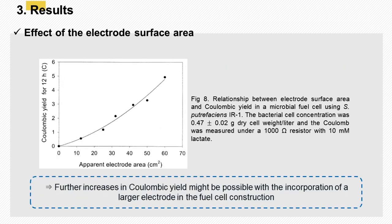Effect of electrode surface area: a series of fuel cells with different anode surface areas were operated for 12 hours using bacterial suspension to measure coulombic yield with the 1,000-ohm resistor. As shown in Figure 8, the coulombic yield increased proportionally with the increase in surface area of the electrodes. This result indicates that further increases in coulombic yield might be possible with the incorporation of a larger electrode in the fuel cell construction.